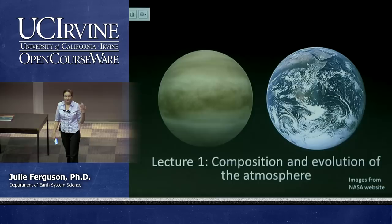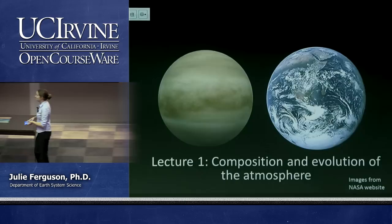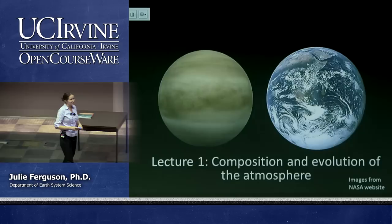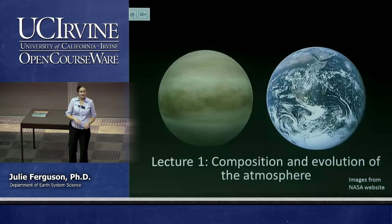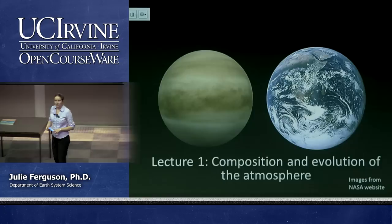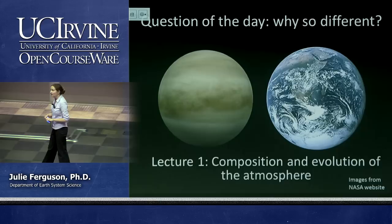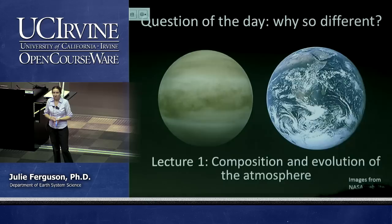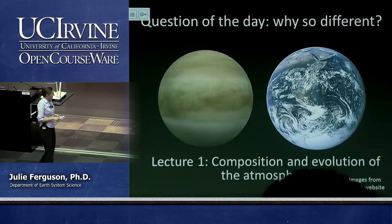Does anyone know what planet is on the left? Venus — absolutely — also known as Earth's evil twin, because it's a pretty miserable place. It's slightly closer to the sun and very much hotter. What we want to ask today is: why are they so different? What has happened on Earth in its history that has made it look and be so different from Venus, which is basically the same size and just a little bit closer to the sun?